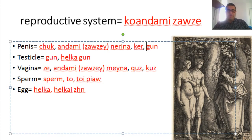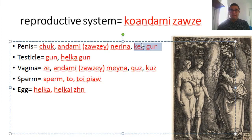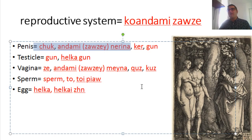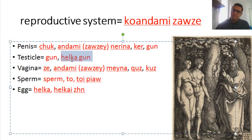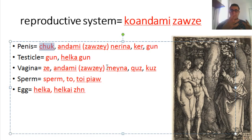Ker and gun are rude words — even in a biological context you should not use them in normal discourse; they're really rude. Testicle — we say gun or helka gun. Helka gun is the more correct way. Note that in Kurdish, chuk and gun can sometimes be used interchangeably for penis and testicle, but helka gun specifically cannot be used for penis.